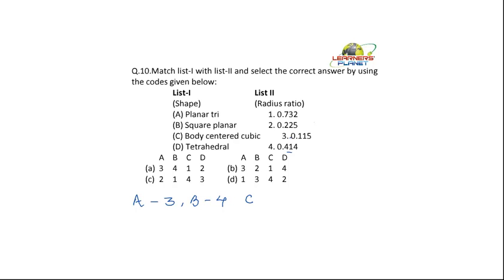C, body centered is 0.732 to 1, and tetrahedral is 0.225, that is D2. So these are the radius ratios. Now here's the radius of 0.835.